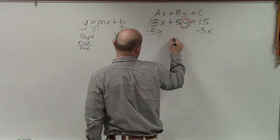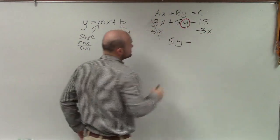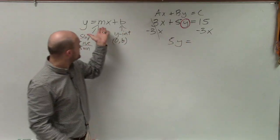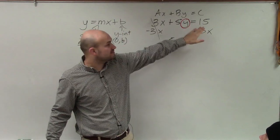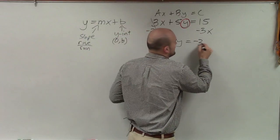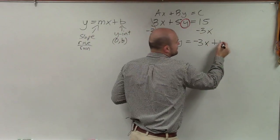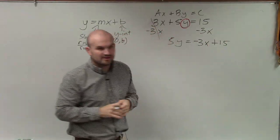So that's going to go to 0, and I'm left with 5y equals. Now remember, we're writing it into slope-intercept form. We always want to write the 3x before the 15. So that's a negative 3x, and that is a positive 15. Does everybody follow me so far?